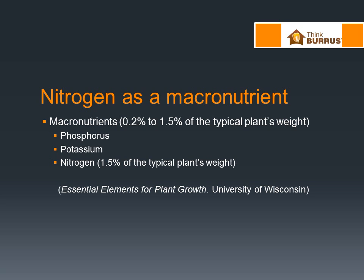Now enter the macronutrients, of which nitrogen is a member. The other two members are phosphorus and potassium, or potash. Two-tenths to 1.5% doesn't sound like much as you look at this slide, but when you think of nutrients pulled into the plant — stuff not acquired from the air and water — this is huge. Nitrogen makes up about 1.5% of the plant by weight, and that means it is really present within the plant. That's why we call it a macro.